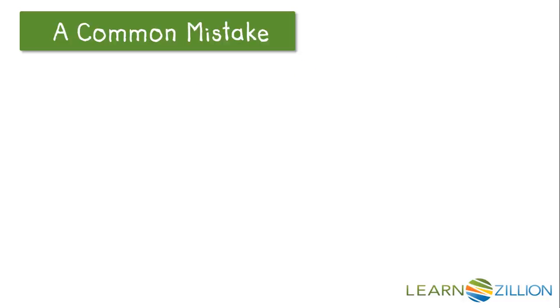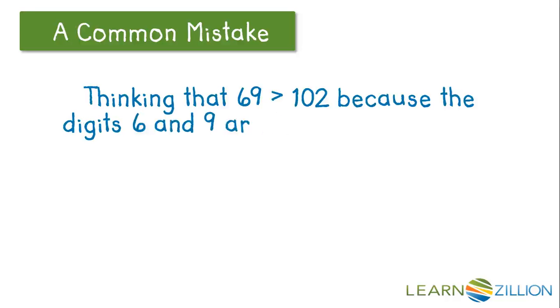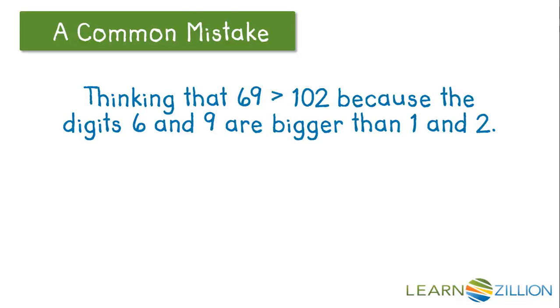A common mistake that many students make is thinking that 69 is greater than 102 because the digits 6 and 9 are bigger than 1 and 2. But actually, 69 is less than 102.